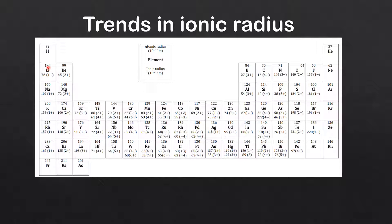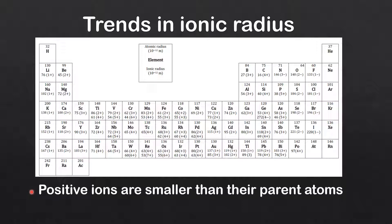Next we'll compare the ionic radius at the bottom to the atomic radius at the top. So let's look at lithium — lithium forms 1+ ions, and you can see that the ionic radius is smaller than the atomic radius. For magnesium, which forms 2+ ions, the ionic radius is also smaller than the atomic radius. And for aluminium, which forms 3+ ions, again the ionic radius is smaller than the atomic radius. So from these three examples, we can see that positive ions are smaller than their parent atoms.